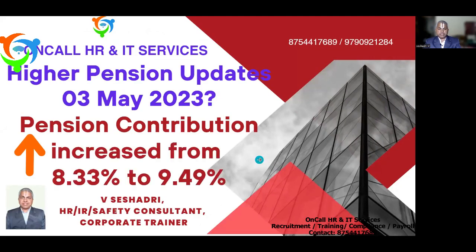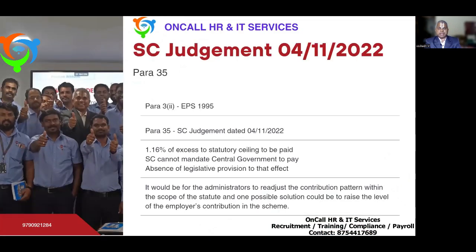Before understanding this increase, we should know the background. Under EPS 1995 scheme, Para 3(2) gives the information on this. It specifies that 1.16% contribution towards pension fund is being paid by the central government — 1.16% towards each and every member's pension fund.